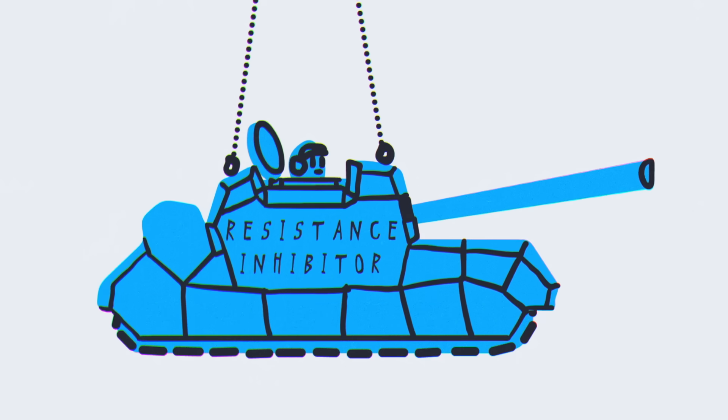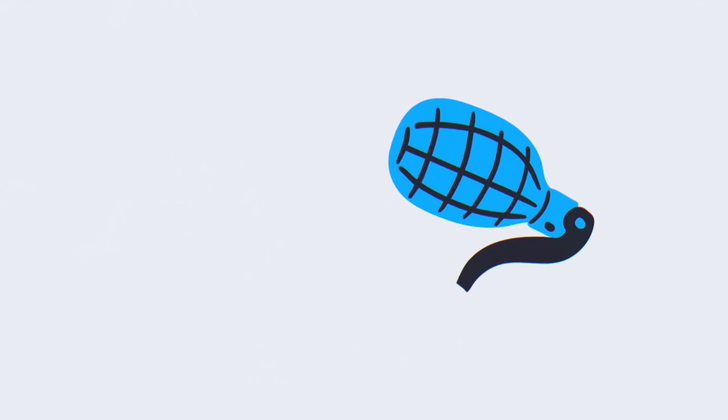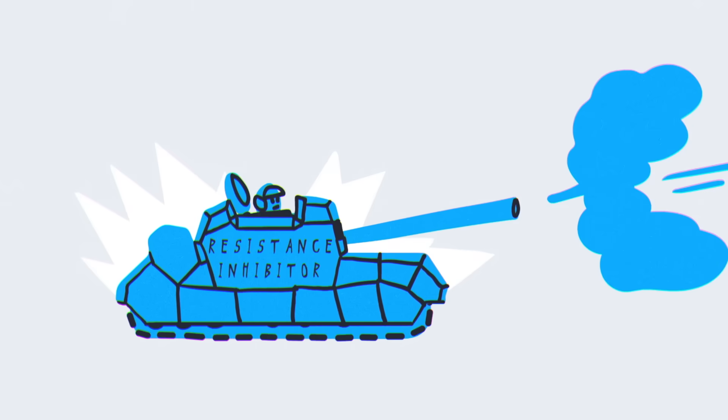We can also package antibiotics with molecules that inhibit resistance. One way bacteria develop resistance is through proteins of their own that degrade the drug. By packaging the antibiotic with molecules that block the degraders, the antibiotic can do its job.